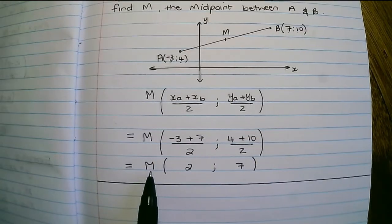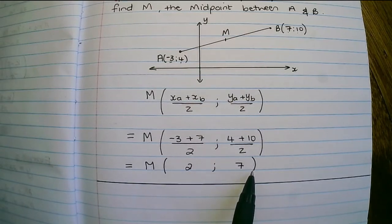So M, the coordinates of the midpoint between A and B is two and seven.